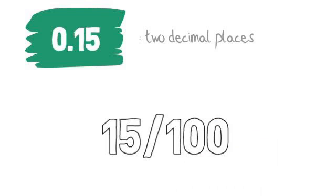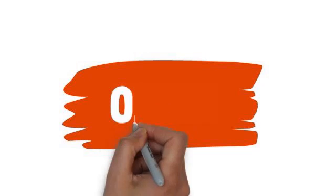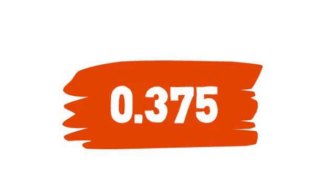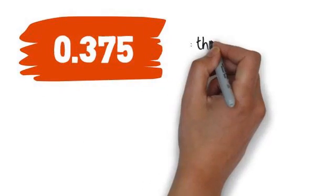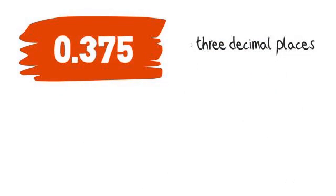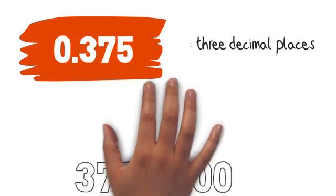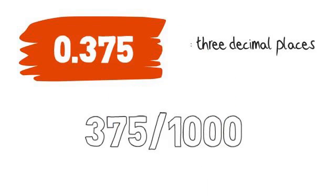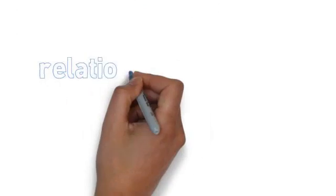What would happen if our decimal was 0.375? We can see that it has three decimal places, meaning that the denominator will have three zeros. This would make the fraction three hundred and seventy-five one-thousandths.